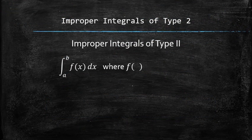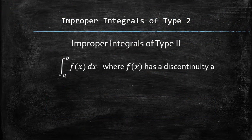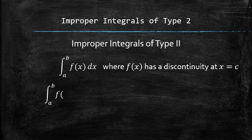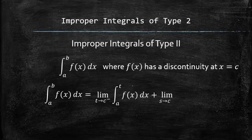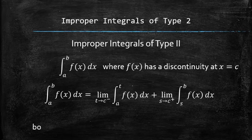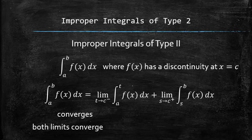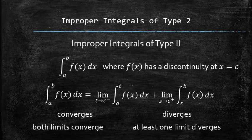Let's consider an integral with a discontinuity in between the upper and lower limits at some value c. In such a case, we are going to use the subdivision property of definite integrals and split the original integral at c into a sum of two improper integrals, each of which we already know how to treat using the limits. If both limits are finite, then we say that the original integral converges. Otherwise, if at least one of the new limits is infinite or doesn't exist, we say that the original integral diverges.